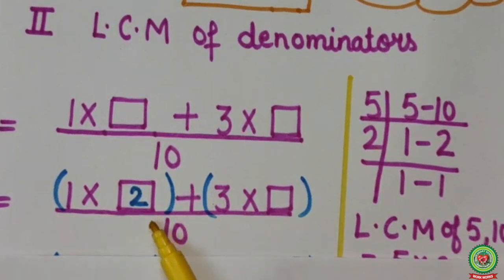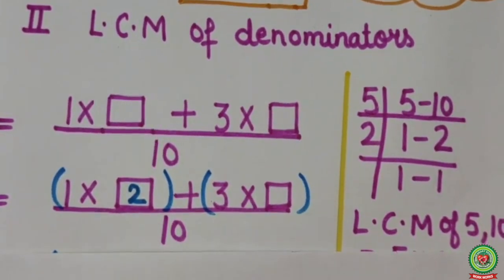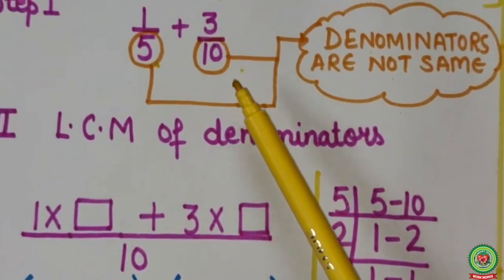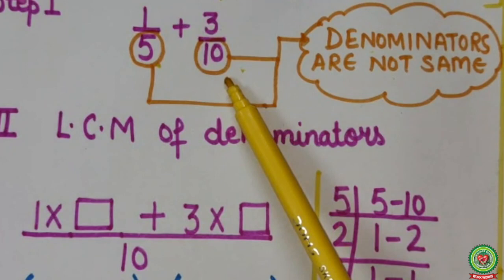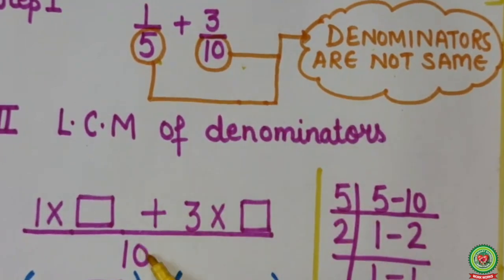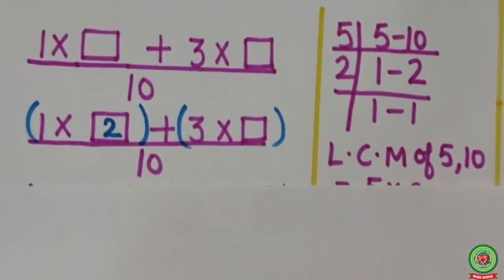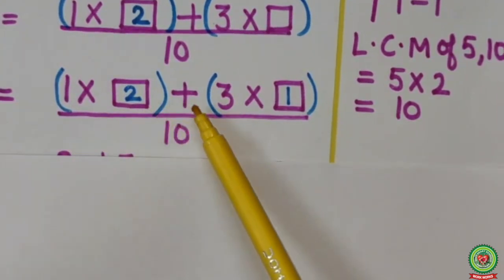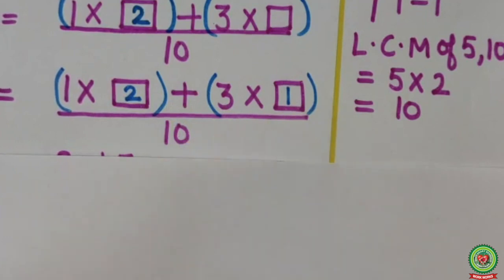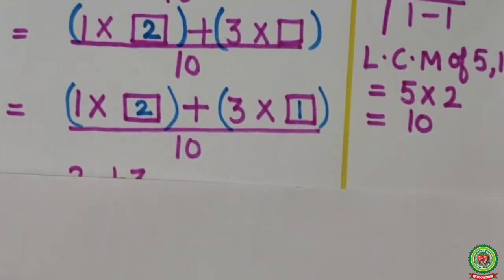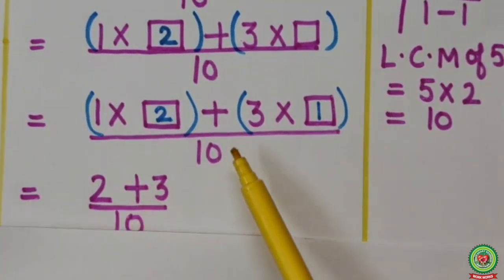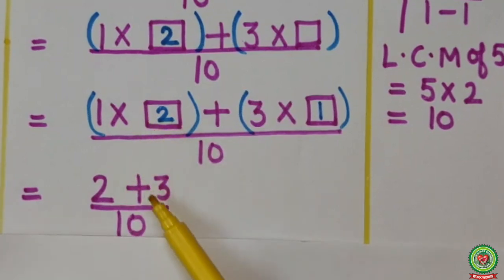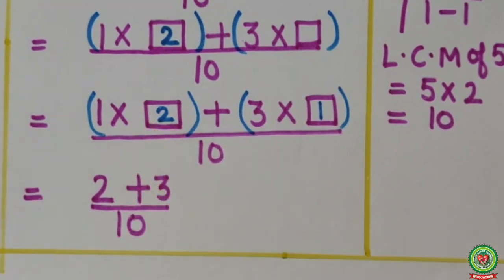It will come 1 into 2 plus 3 into box upon 10. Now to fill the second box, we will see the second fraction. In the second fraction, denominator is 10. In table of 10, 10 will come at 1. So in the second bracket, I will write 1. So here it will come 1 into 2 plus 3 into 1 upon 10. First multiply: 1 into 2 equals 2, and 3 into 1 equals 3. So it will come 2 plus 3 upon 10. Now add 2 and 3, we will get 5 upon 10.